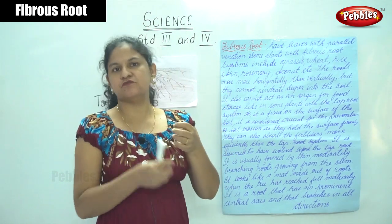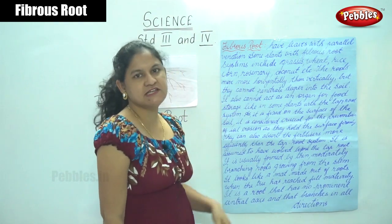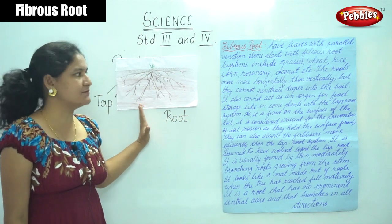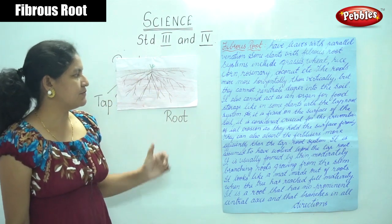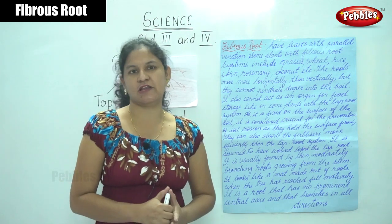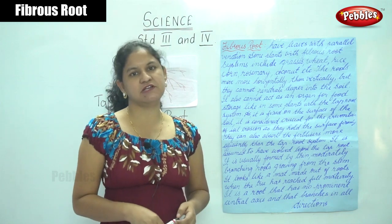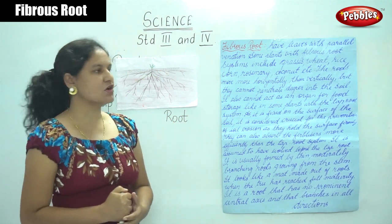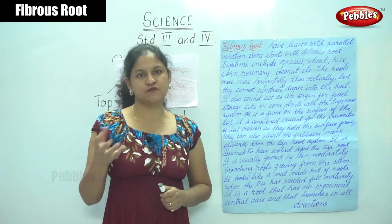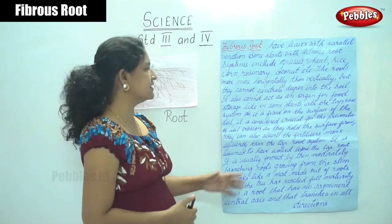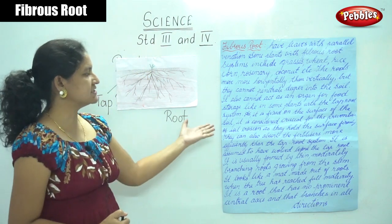If we uproot a rice plant or a wheat plant, we can see the fibrous root system. The roots move more horizontally than vertically. A fibrous root cannot penetrate deeper into the soil compared to a tap root, and it also cannot act as an organ for food storage like a tap root does.